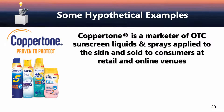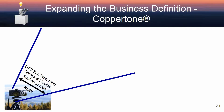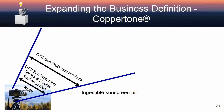Let's look at some hypothetical examples. Coppertone is a marketer of OTC sunscreen liquids and sprays applied to the skin and sold to consumers at retail and online venues. How could Coppertone innovate with an expanded business definition? Starting where Coppertone is today, in this hypothetical world of a broader business definition, we start with OTC sun protection products — eliminating the definition that includes just sprays and liquids. In this hypothetical vision, we see that Coppertone may someday invent an ingestible sunscreen pill, something they would never have looked at with their current business definition.